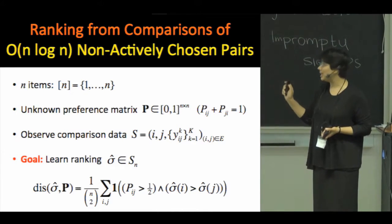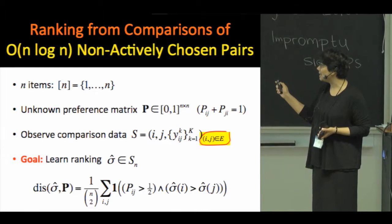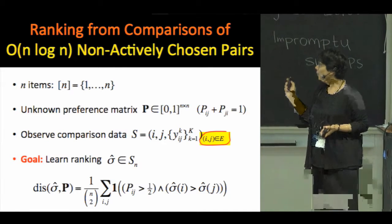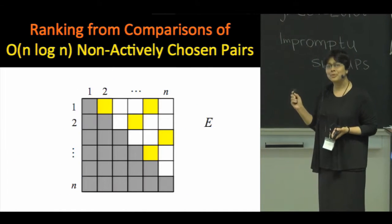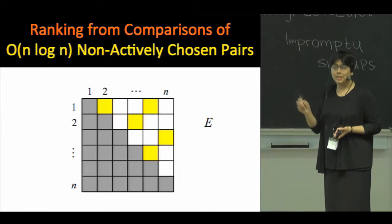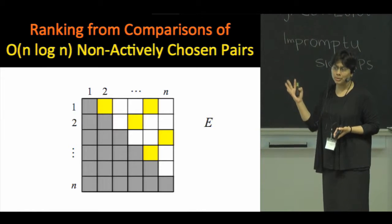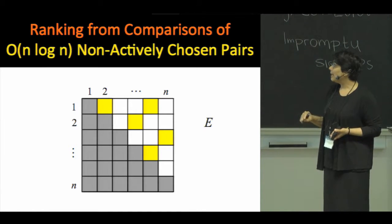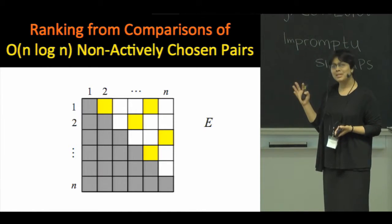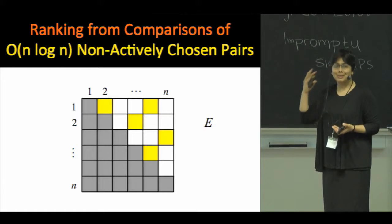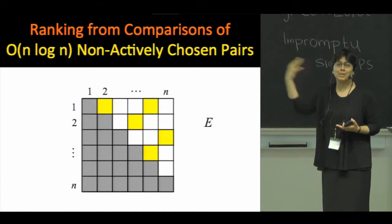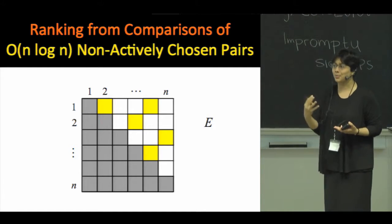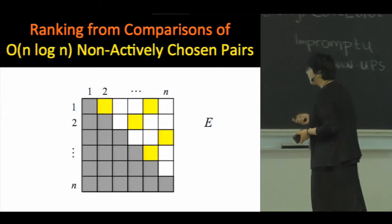The key thing for us is the size and the nature of the set of pairs E. What we want is that the set of pairs that are compared is small, on the order of N log N, and that the set of pairs is chosen in advance, non-actively, before the outcomes of any comparisons are observed.